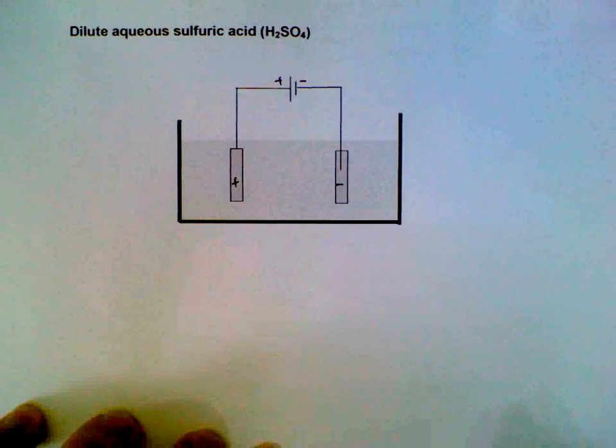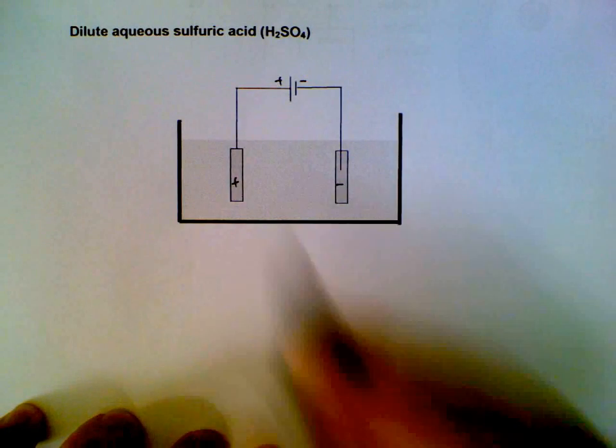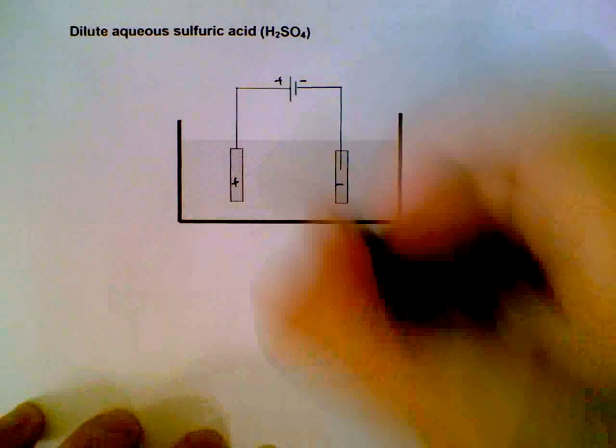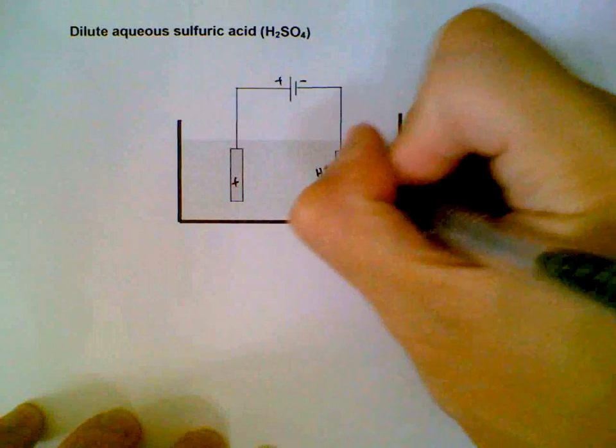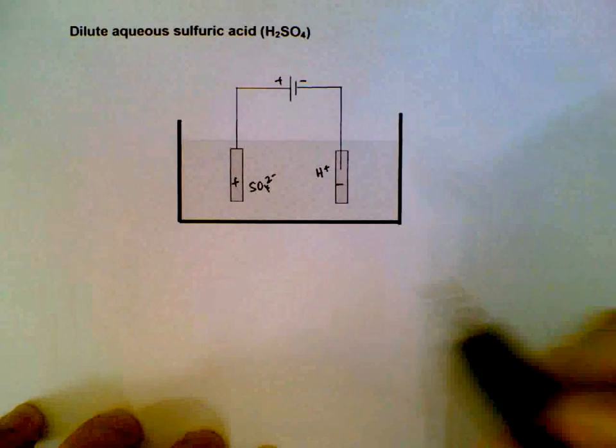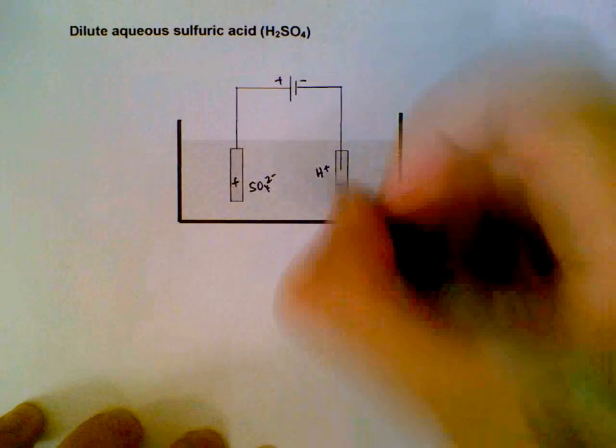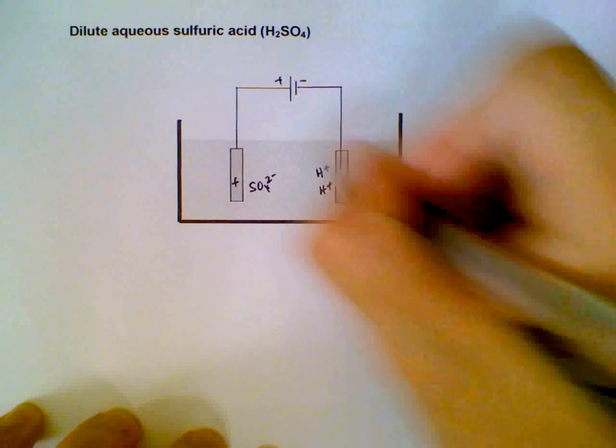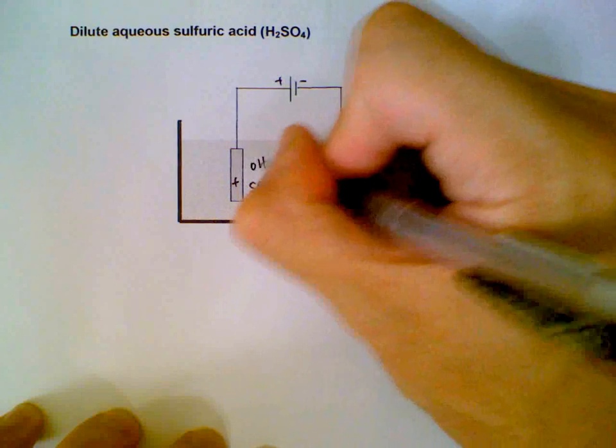Then we look at the ions that are present in the electrolyte. Sulfuric acid gives us H+ and sulfate ions. From water, we also have H+ and hydroxide ions.